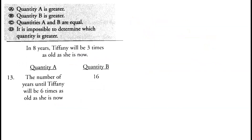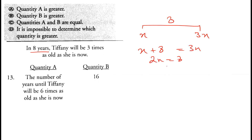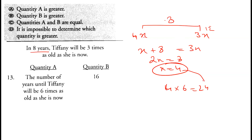Question thirteen: In eight years Tiffany will be three times as old as she is now. If she is x now, then x + 8 = 3x, so 2x = 8 and x = 4. She is currently 4 years old. For her to be six times her current age (24), it takes 20 more years. Since 20 is greater than 16, option A is correct.